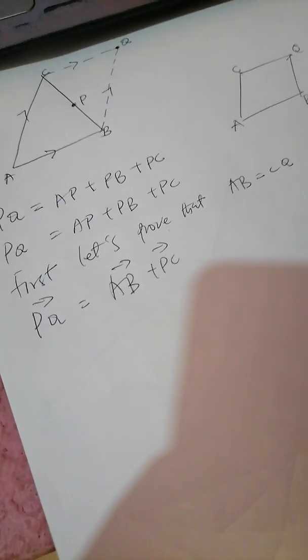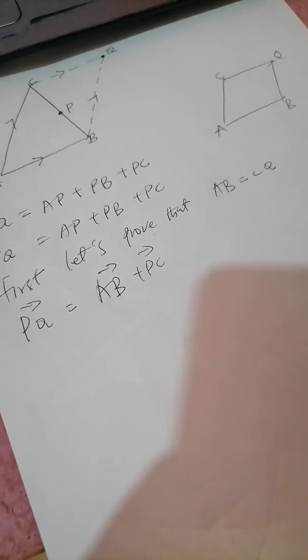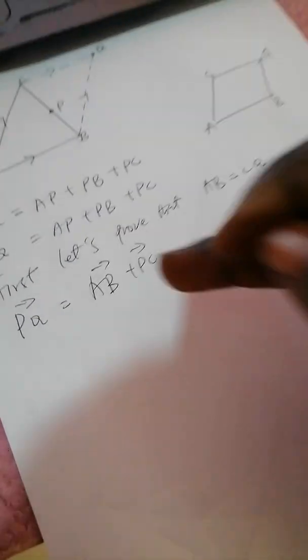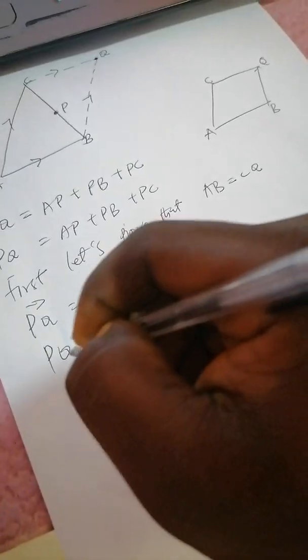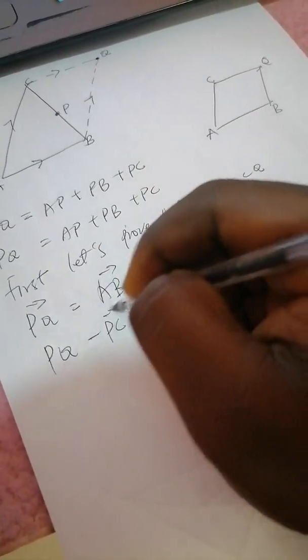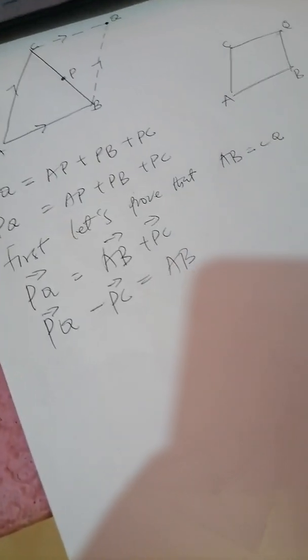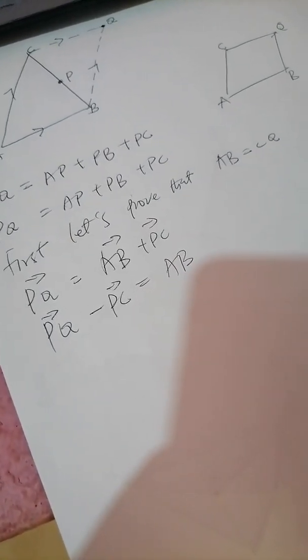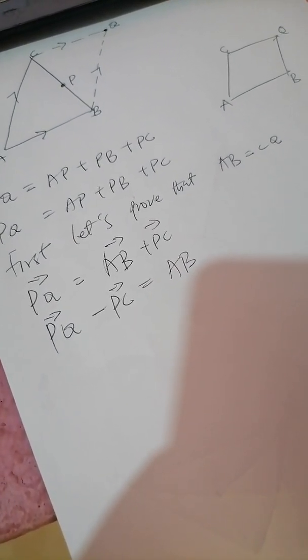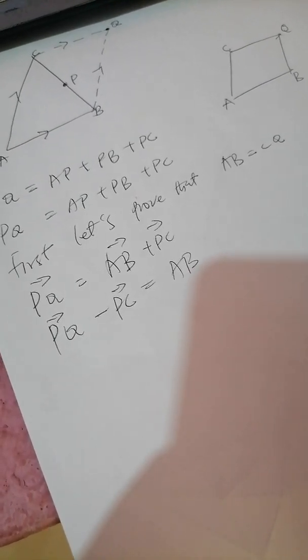I've gotten my AB, so it means I have to find a way to find my CQ. So I'll bring this over here, and I have PQ minus PC is equal to AB. Now if you watch this carefully, you can see that PQ minus PC is actually CQ.